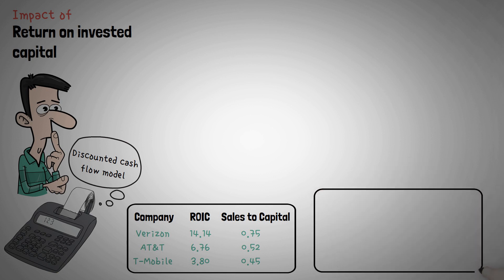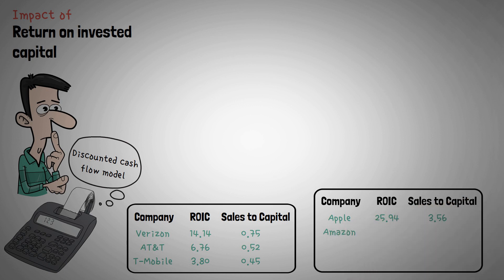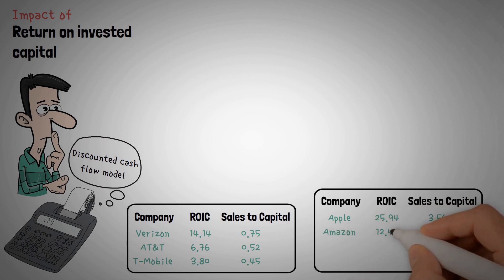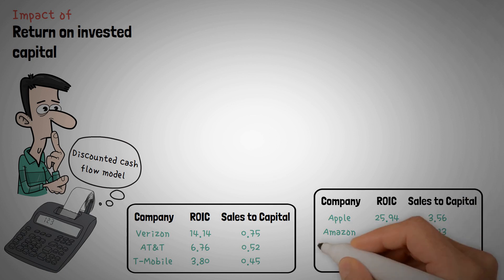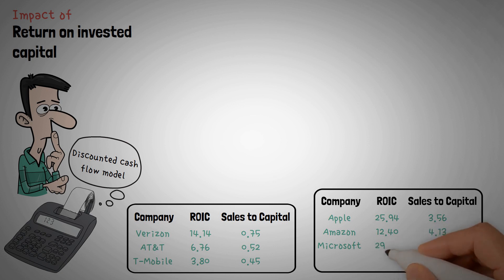Comparing the largest market caps: Apple with an ROIC of 25.94% and sales-to-capital of 3.56. Amazon with an ROIC of 12.40% and sales-to-capital of 4.13. Microsoft with an ROIC of 29.40% and sales-to-capital of 2.46. Google with an ROIC of 22.51% and sales-to-capital of 1.65.